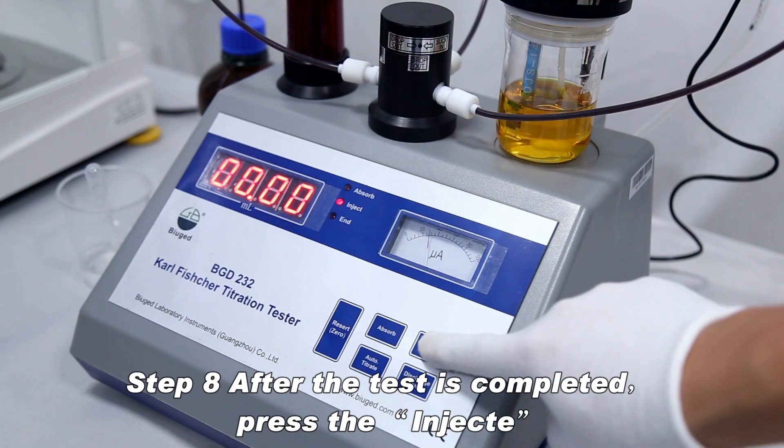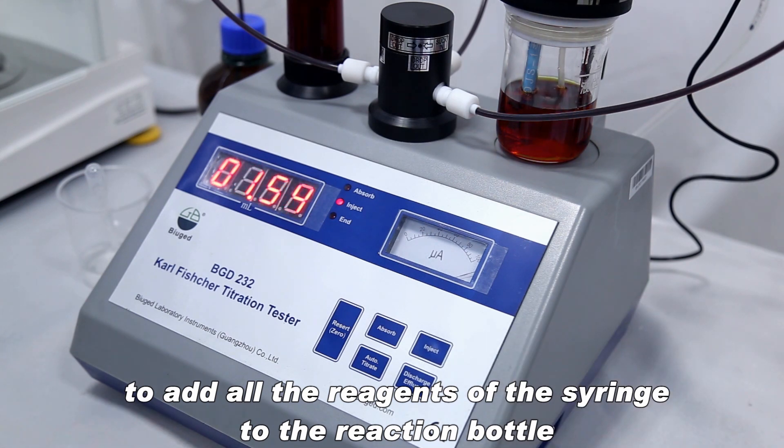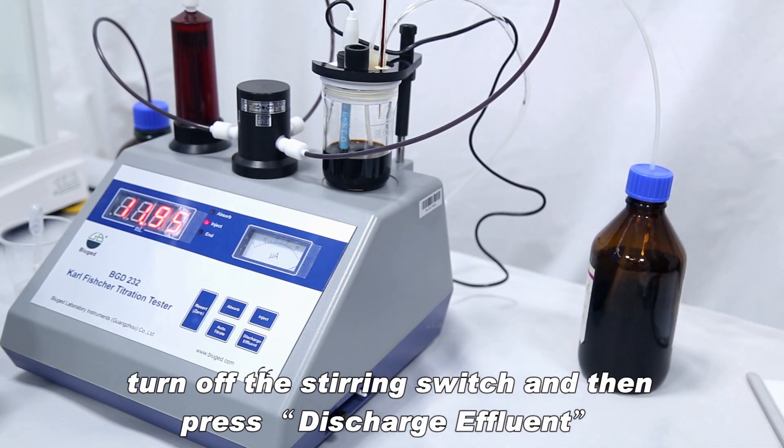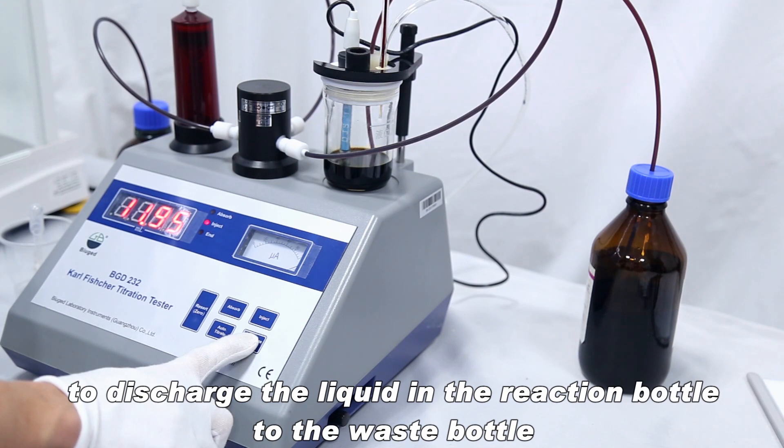After the test is completed, press the inject to add all the reagents of the syringe to the reaction bottle. Turn up the stirring switch and then press discharge effluent to discharge the liquid in the reaction bottle to the waste bottle.